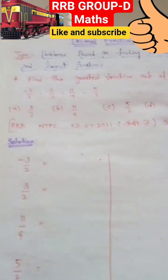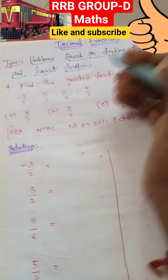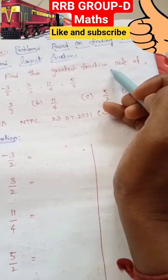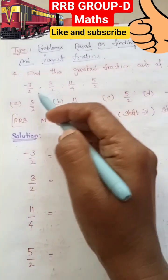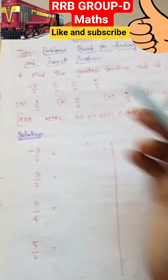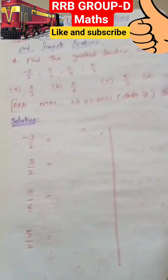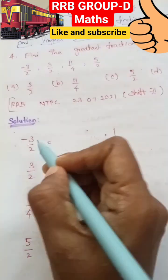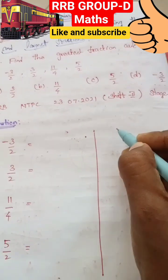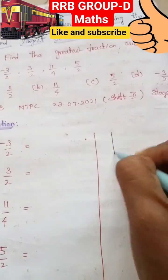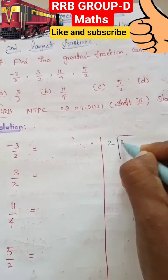Decimal fraction. Find the greatest fraction from the given sequence. First one: 3 by 2 minus 3 by 2. First, find the 3 by 2 value. So 2 goes into 3.